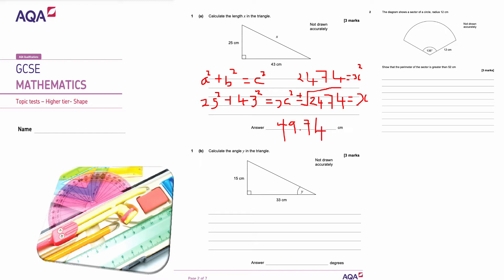This is part B. Calculate the angle Y in this triangle. Well, it's an angle here so I'm looking at trigonometry. So labeling my sides, this is the opposite, this is my adjacent because it's next to the angle, and this is my hypotenuse. I've been given information about the opposite and the adjacent.